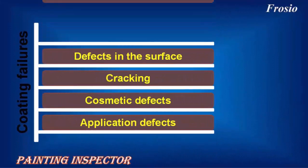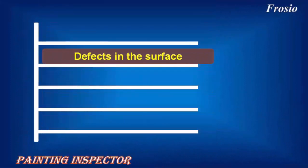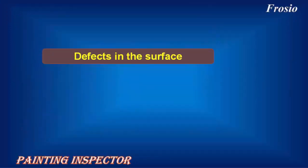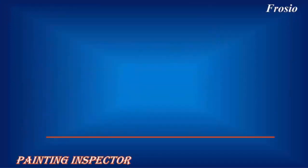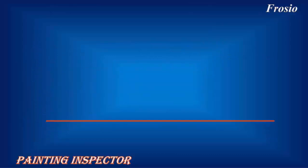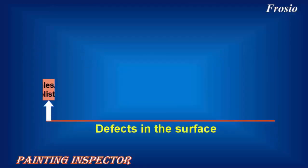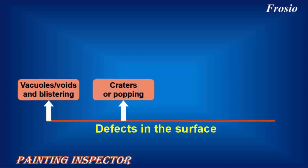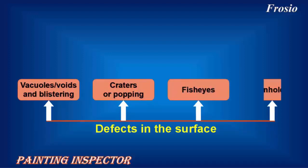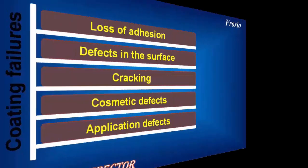Number 2: Defects in the Surface. Defects in the Surface include Bacules or voids and blistering, Craters or popping, Fish Eyes, and Pinholes.